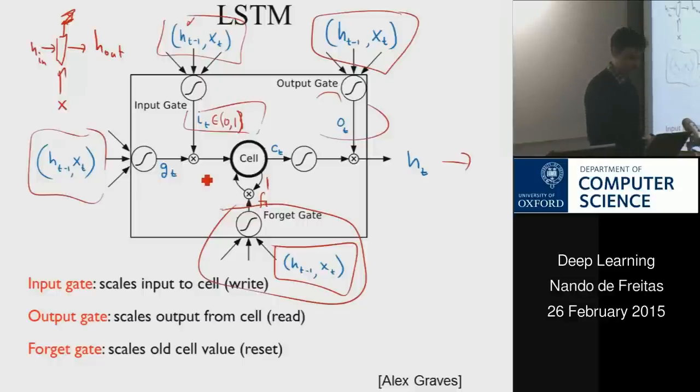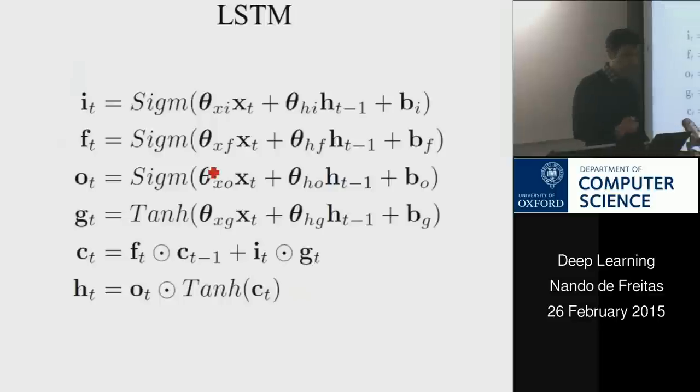multiplicative operations are very useful. When you implement it, this picture gets translated to this code. You have x, you have the previous h, that allows you to get i, and then you do exactly the same operation for the other gates.